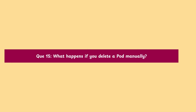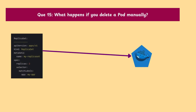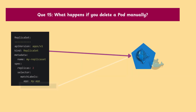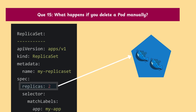Question 15: What happens if you delete a pod manually? The replica set notices it's missing and creates a new pod to maintain the desired state.